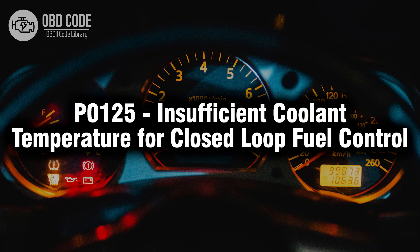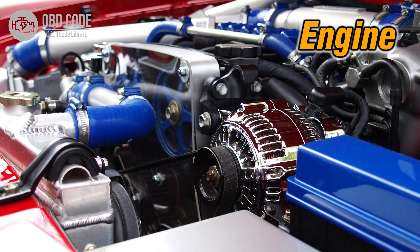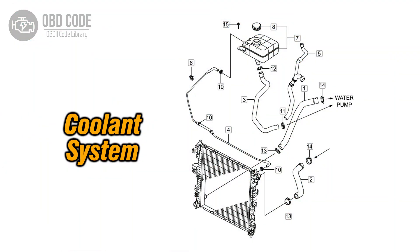Welcome. In this video we will talk about code P0125, its symptoms, causes and possible solutions. The P0125 trouble code indicates that the engine does not reach the required temperature for efficient closed-loop fuel control within a specific time frame after starting. This code typically points to issues related to the engine's coolant temperature not reaching the necessary operating temperature.